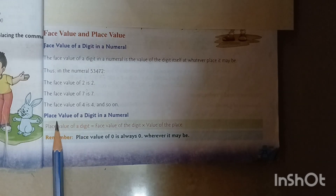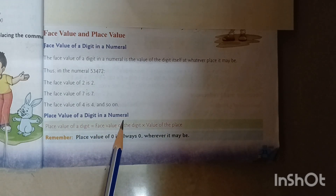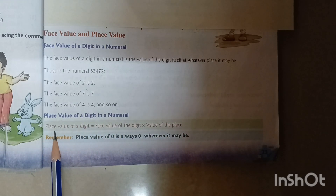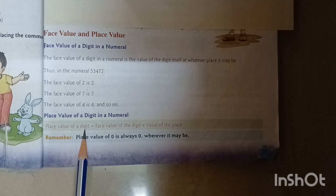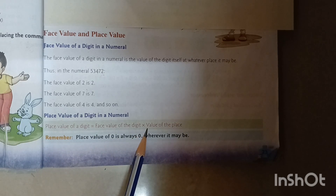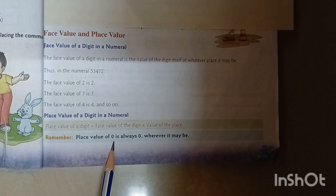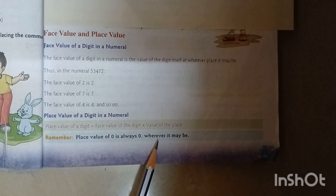Then, place value of a digit in a numeral. The place value of a digit equals the face value of the digit multiplied by the value of the place. Remember, the place value of 0 is always 0, wherever it may be.